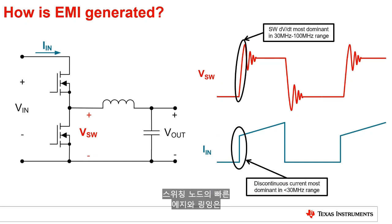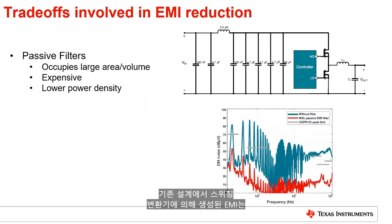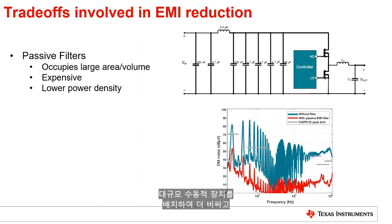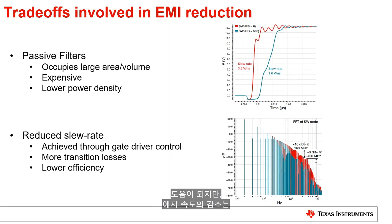In conventional designs, the EMI generated by the switching converters is mitigated using two main methods, both of which have an associated penalty. To deal with the low frequency emissions and meet appropriate standards, large passive filters are placed at the input of the switching converters, leading to a more expensive, less power dense solution. The high frequency emissions, on the other hand, are typically mitigated by slowing down the switching edges by effective gate drive design. While this helps in reducing the EMI in the greater than 100 MHz band, the reduced edge rates lead to increased switching losses and hence a lower efficiency solution. Thus, effectively, there is an inherent density and efficiency trade-off that needs to be made for low EMI solutions.